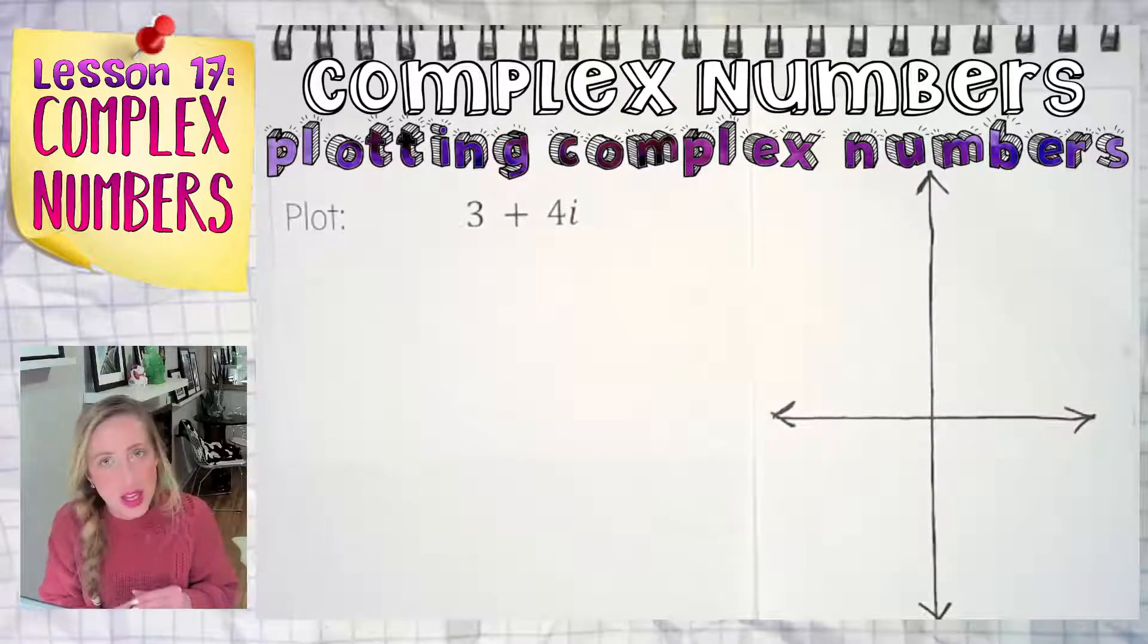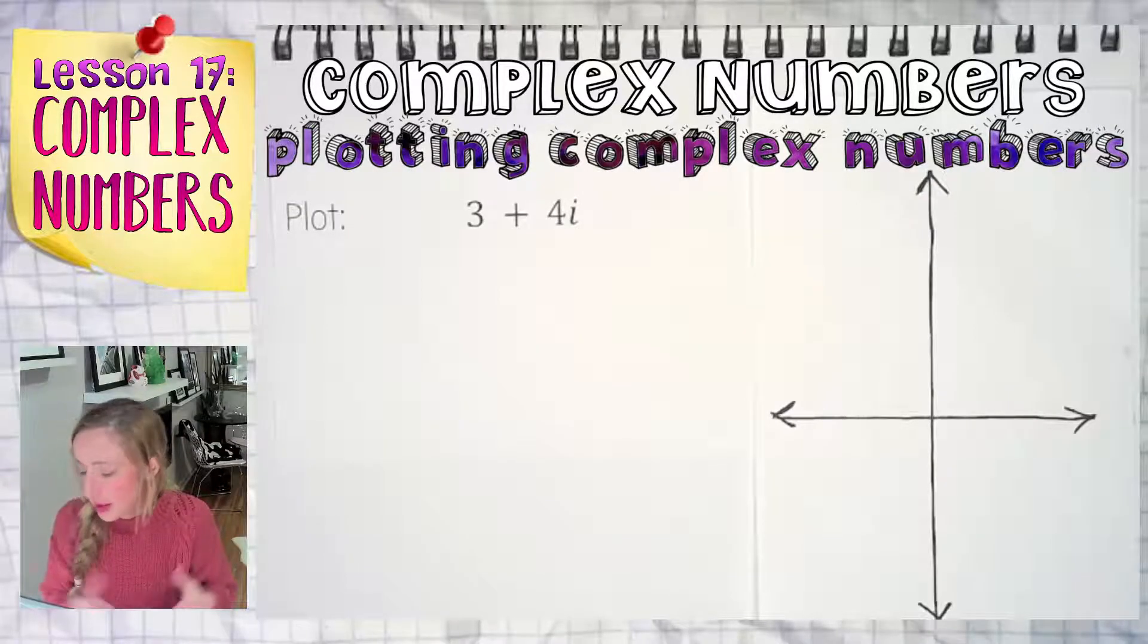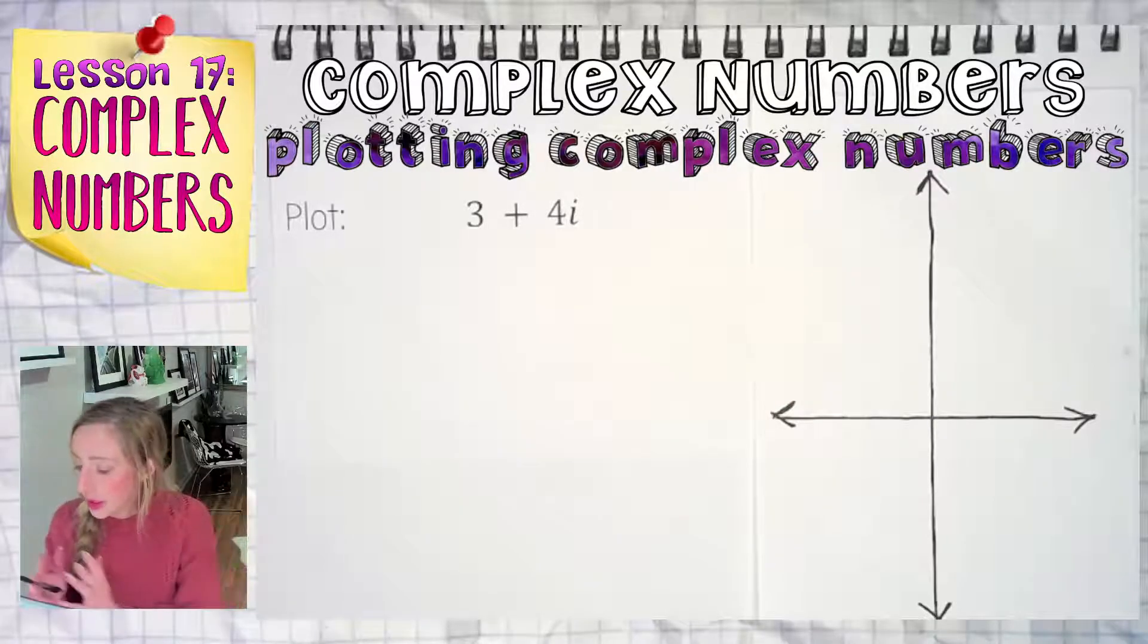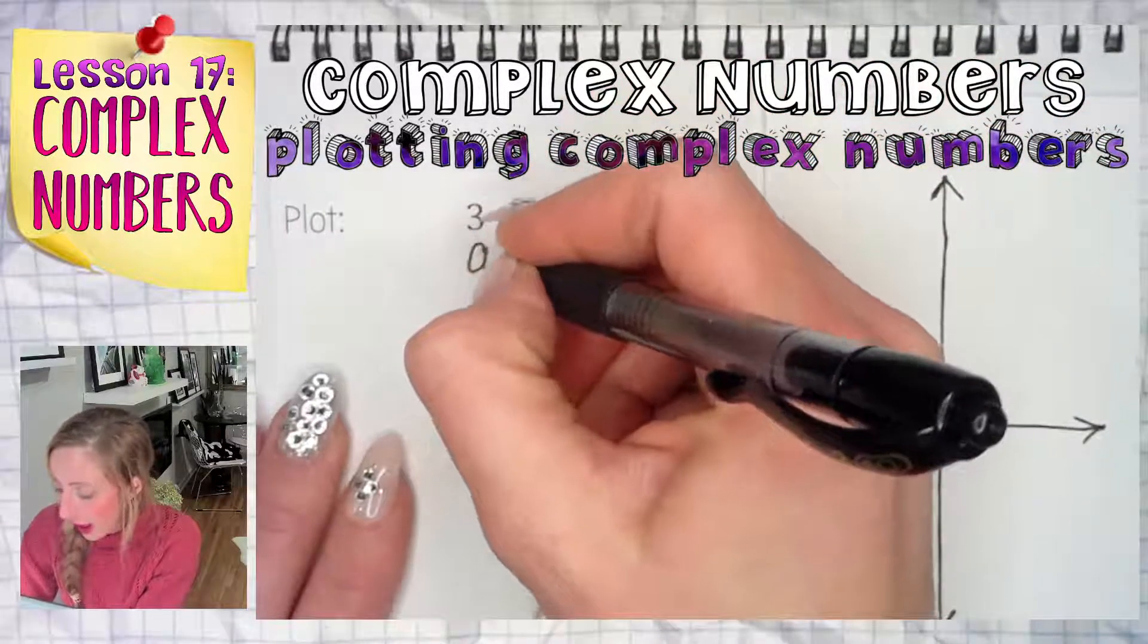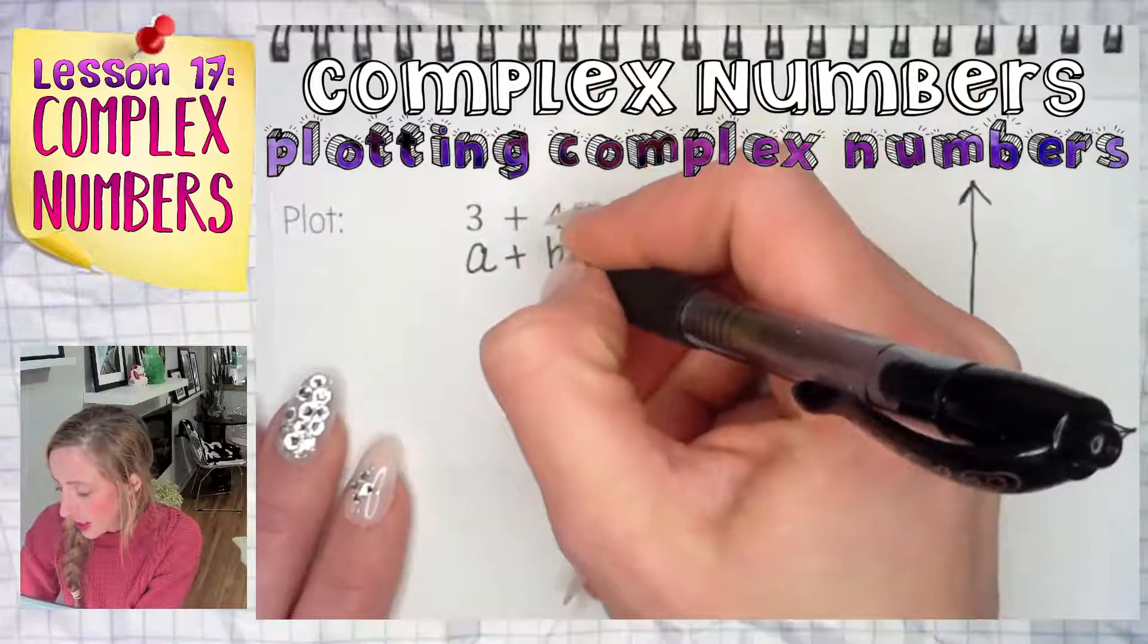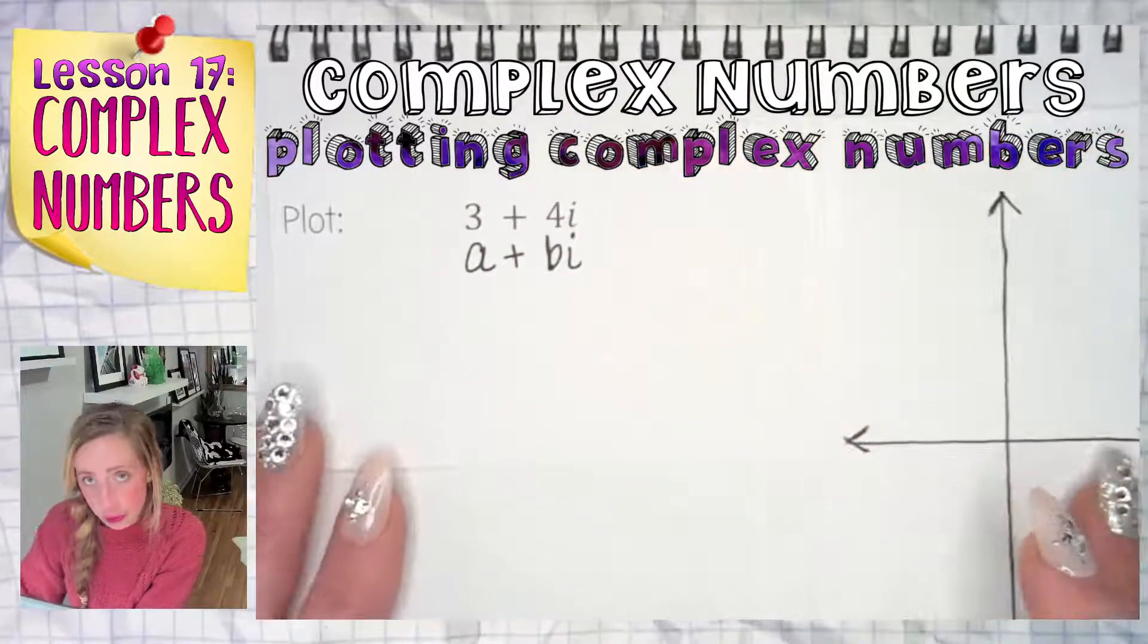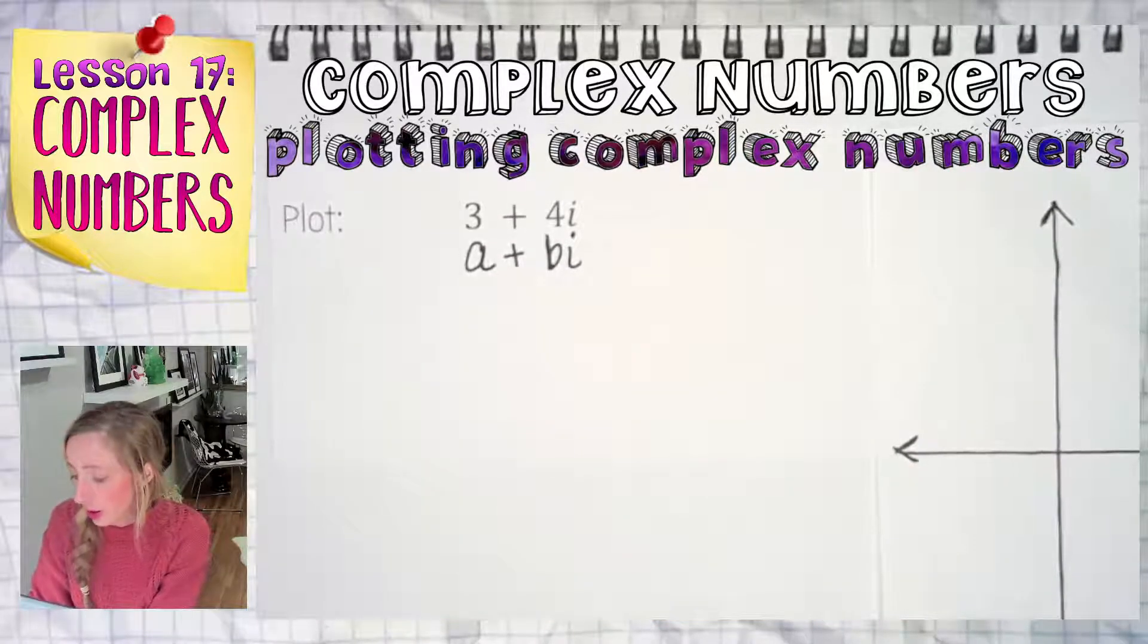Hey guys, in this set of recordings we are going to go over how to plot complex numbers. Complex numbers are the sum or difference of a real component and the imaginary component. They are known to be in the form of A plus B I, where A is going to be our real component and the B value is the imaginary component.